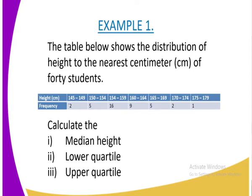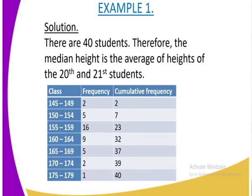The height of the students that are having the height of 150 to 154 centimeters, they are 5 and so forth up to 175 to 179 centimeters. It's only one student. Then you are required to calculate the mean, that is the median height, the lower quartile and the upper quartile. So that is what I would like us to solve.